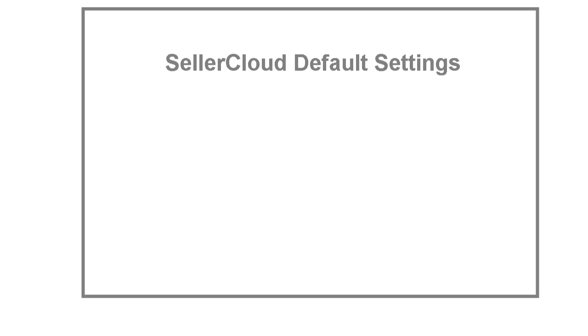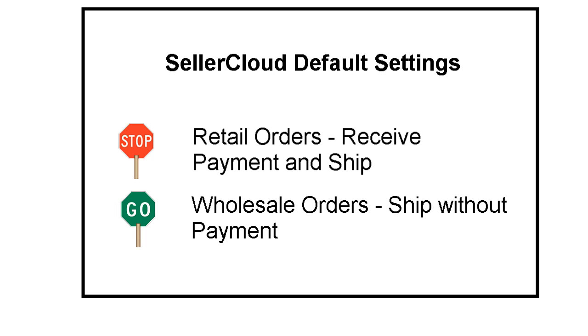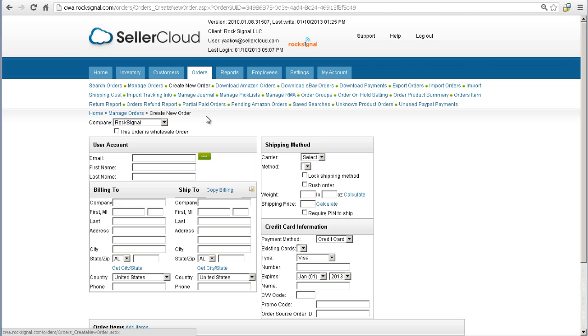In this video, we'll look at configuring wholesale orders. By default, SellerCloud will prevent a retail order from being shipped before payment is received. Creating a wholesale order, however, will allow the order to be shipped without payment.